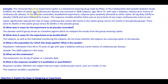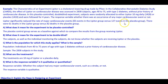The study involved 2,838 subjects ages 40 to 75 with type 2 diabetes without prior history of cardiovascular disease. In the placebo-controlled, double-blind experiment, subjects were randomly allocated to either Lipitor 10 mg daily (1,428 subjects) or placebo (1,410 subjects) and were followed for 4 years. Lipitor significantly reduced the rate of major cardiovascular events: 83 events in the Lipitor group versus 127 events in the placebo group.